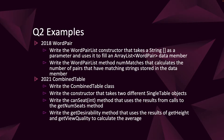In 2021, we had the combined table question, and we had to write the entire CombinedTable class. In part A, we wrote the constructor that took two different SingleTable objects and initialized the data members accordingly. We also had to write the canSeat method taking an int parameter, using calls to getNumSeats on the data members — not the constructor parameters. Then we wrote the getDesirability method that used the results of calls to getHeight and getViewQuality from the two SingleTable objects to calculate and return the average. Remember: talk to the data member, not the parameter to the constructor, because you can't access that outside of it.